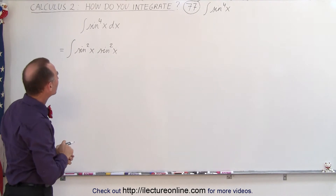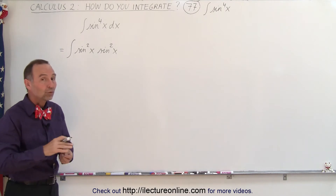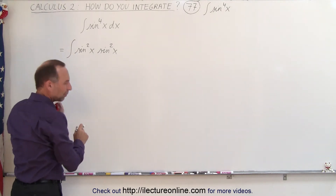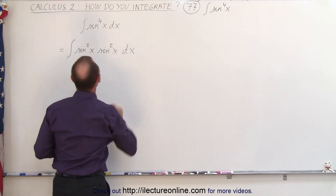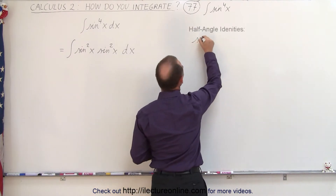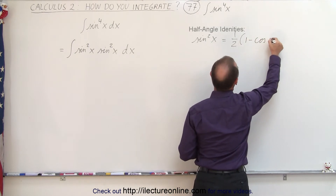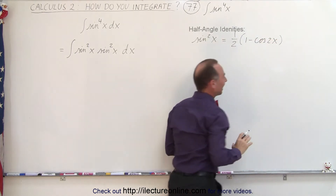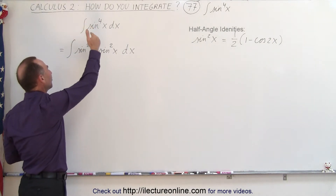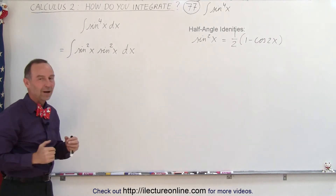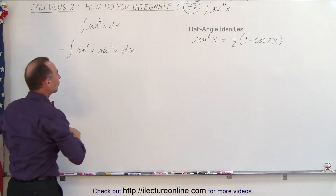We're going to use the substitution where we write each one of them as 1 minus cosine squared of x. Actually, the trick is to write sine squared of x as 1 half times 1 minus the cosine of twice the angle. The trick has to be such that we can lower the exponent — we don't want something to the fourth, not even something to the second power. We want the integrand to be to the first power.